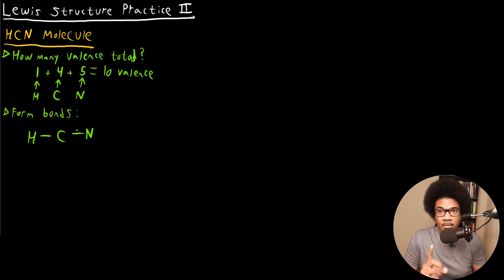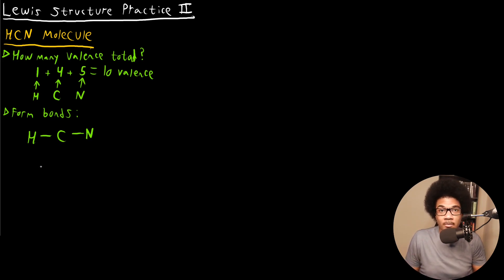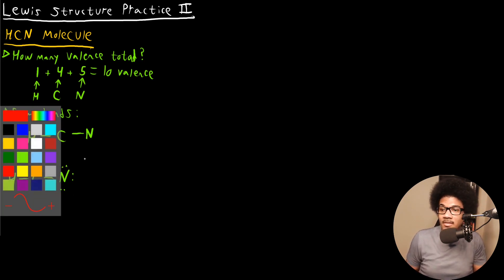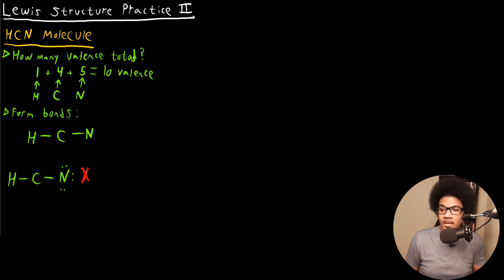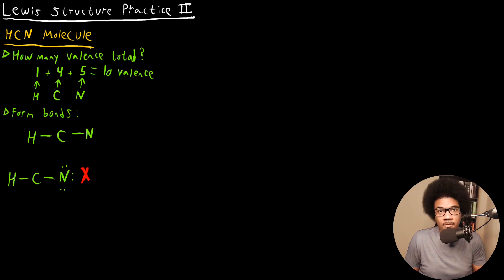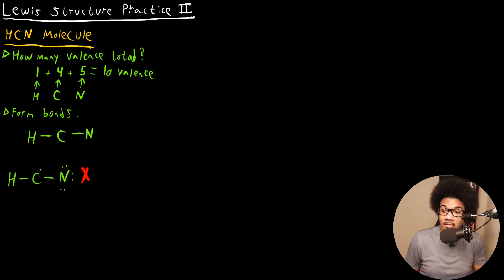We have six more electrons to account for. You might think about putting all remaining valence electrons on the most electronegative atom, nitrogen. But this is not correct, because carbon still has an incomplete octet. Hydrogen is fine with its two electrons, and nitrogen is fine with its lone pairs, but carbon is deficient at its octet — so this one does not work.